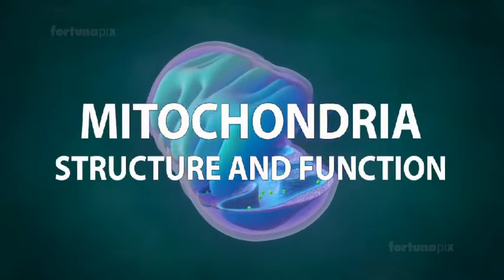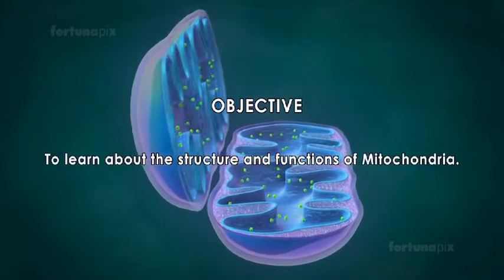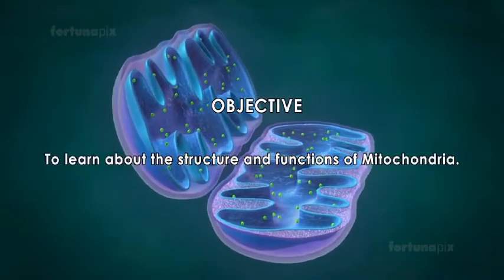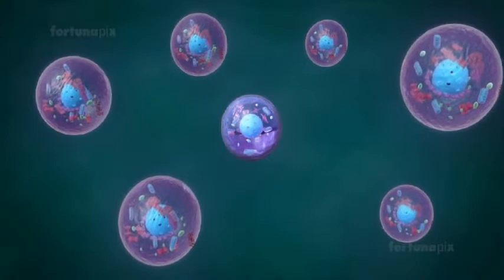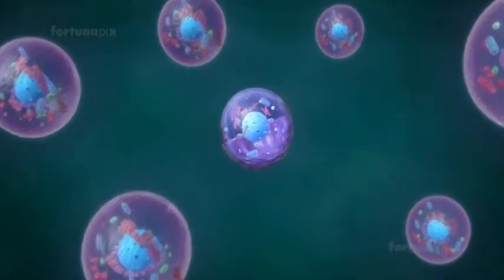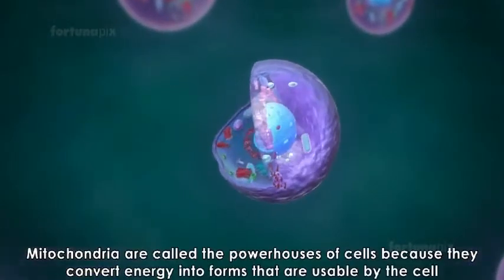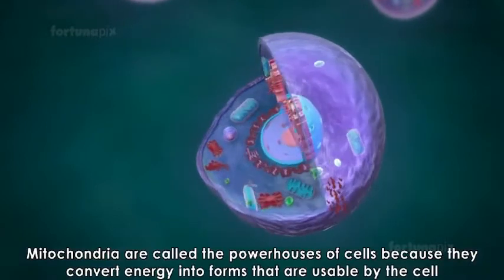Mitochondria structure and function. Objective: to learn about the structure and functions of mitochondria. Mitochondria are located in the cytoplasm of cells and are among the largest cell organelles within a cell. They are called powerhouses of cells because they convert energy into forms that are usable by the cell.